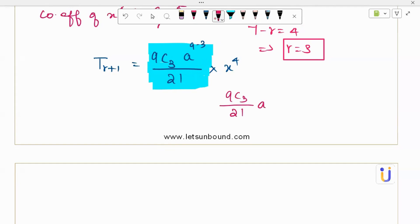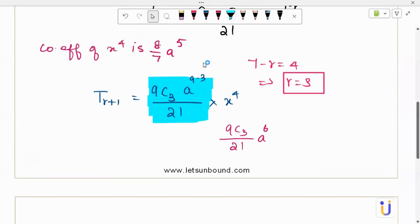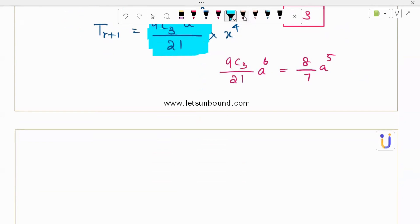So a power 9 minus 3 which is 6. Don't use 6 power 4. We are just equating coefficients. 8 by 7 a power 5. So we equate these two. Right? Now it's simple to solve. We can go with the equation solver.